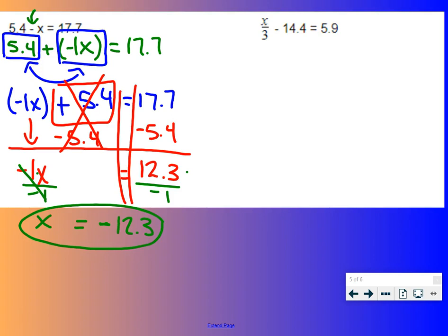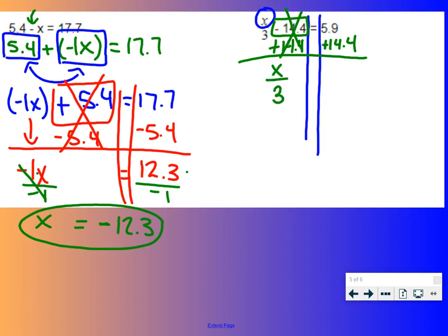Next example, we have x divided by 3 minus 14.4 equals 5.9. Draw those railroad tracks. We got our variable right there. We want to undo the minus 14.4 first with a plus 14.4 on both sides. The 14.4's cancel each other out. We get x divided by 3 equals 5.9 plus 14.4 would be 20.3. Last piece. Undo this division with multiplication. We're going to multiply both sides by 3. 3's cancel each other out. We have x equals 20.3 times 3, which is 60.9.